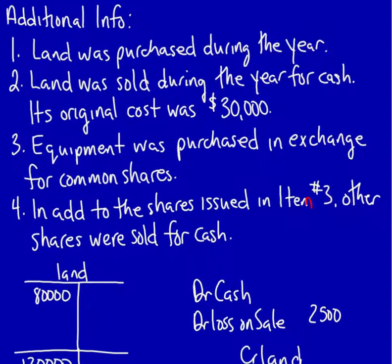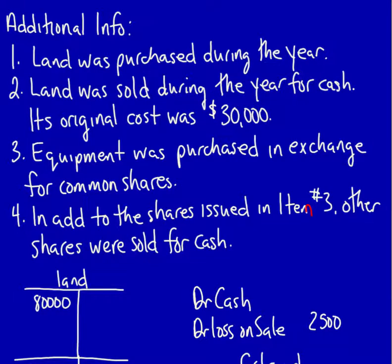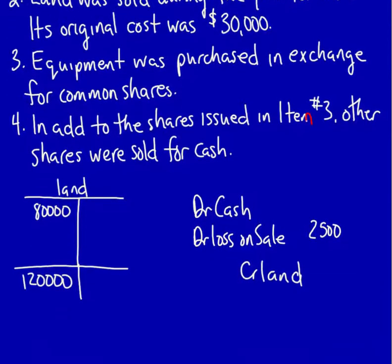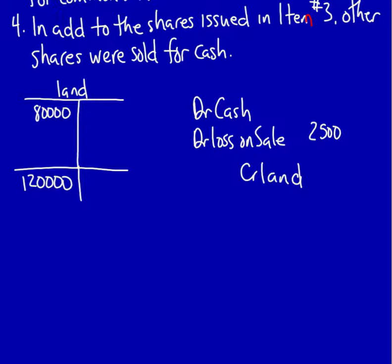Where do I go now? I go to the additional information. Land was sold during the year for cash. Its original cost was $30,000. So I can immediately fill in the $30,000 right here. Now I have everything that I need to fill in my blanks. I know that a credit to land would be $30,000. My cash must have been $27,500. I now can solve for the unknown in the debit side of land, which would be $70,000.